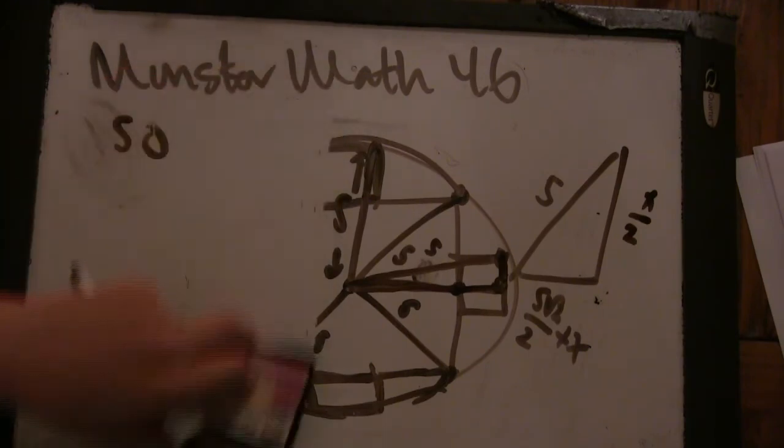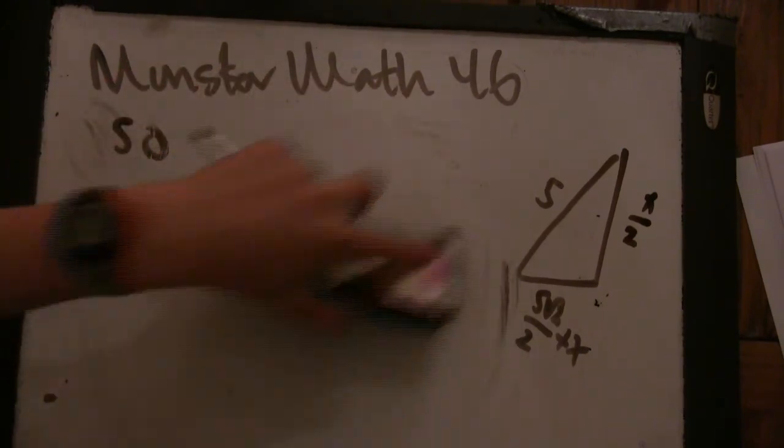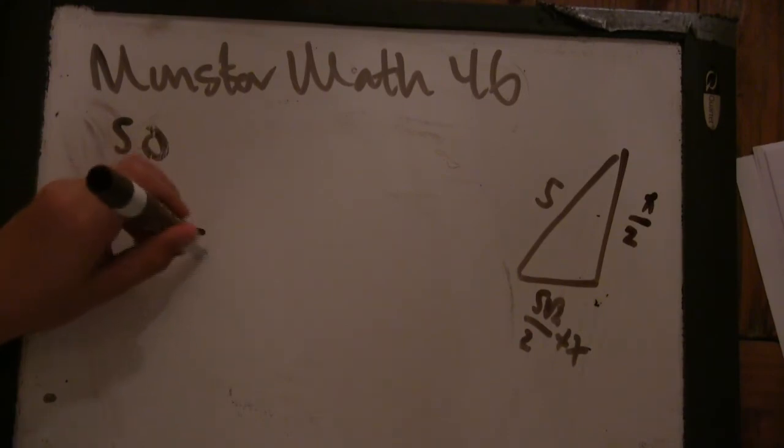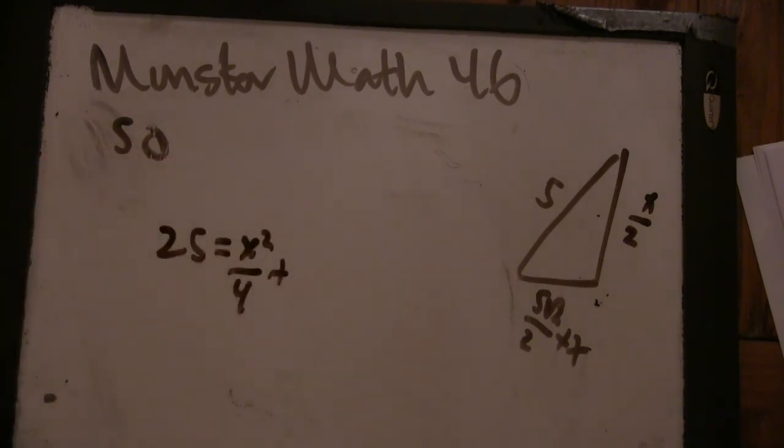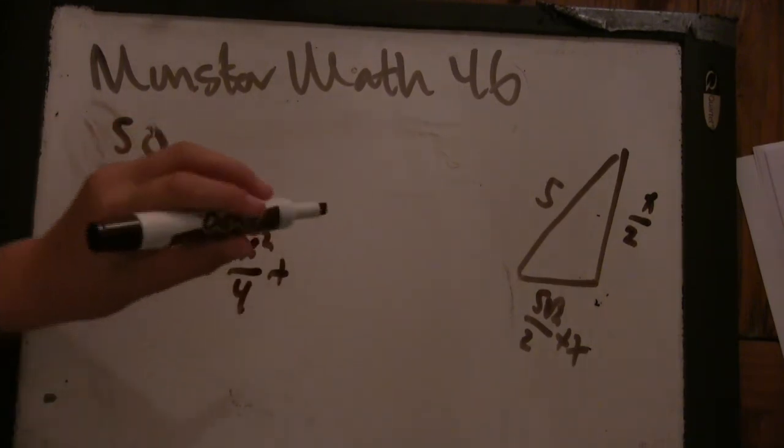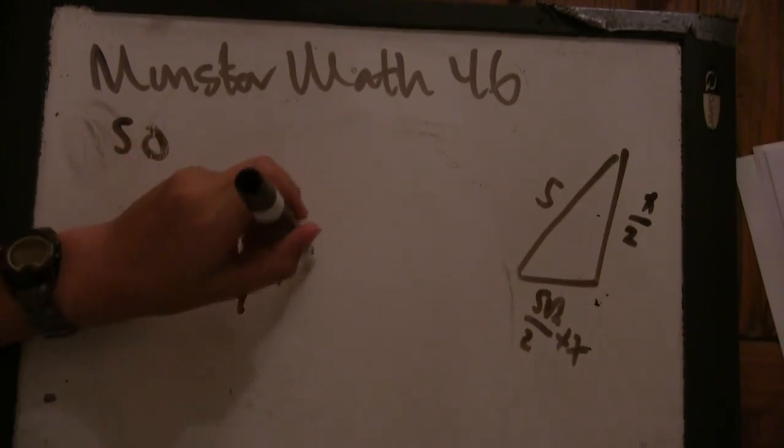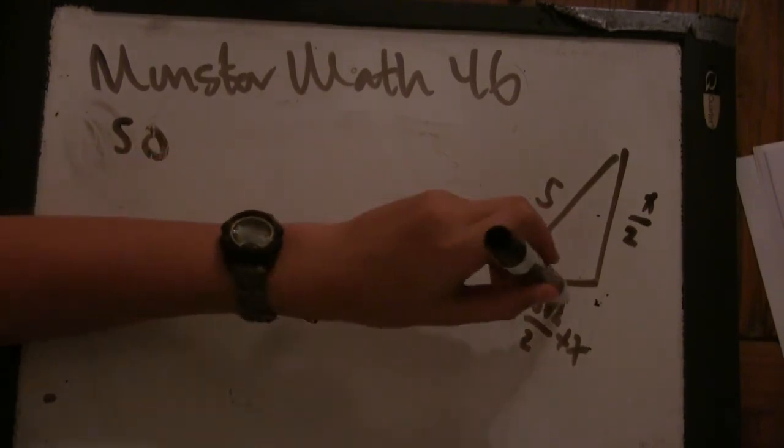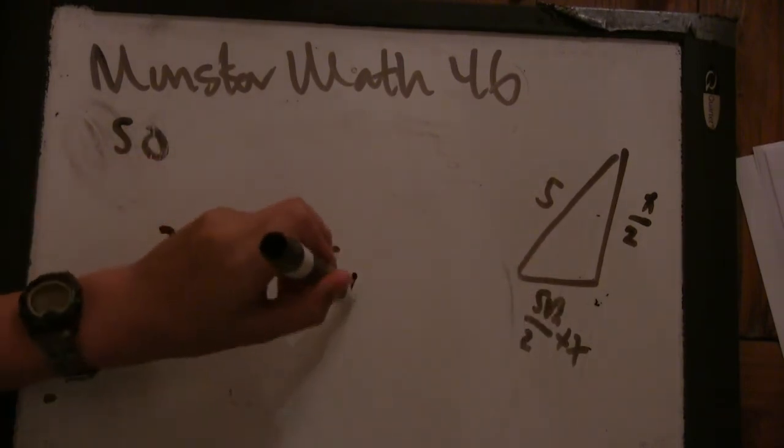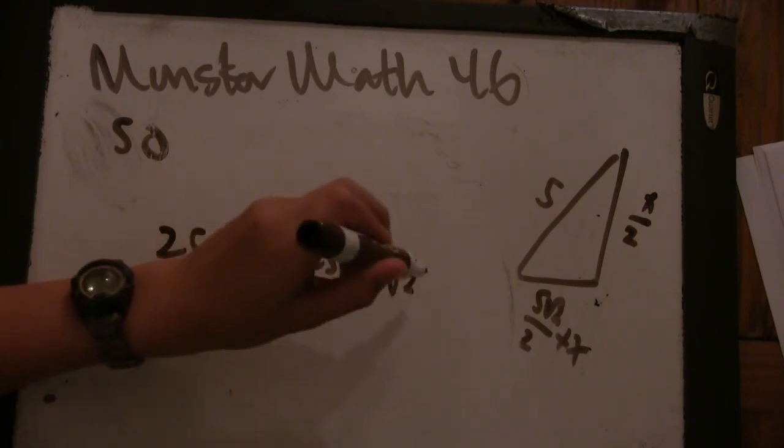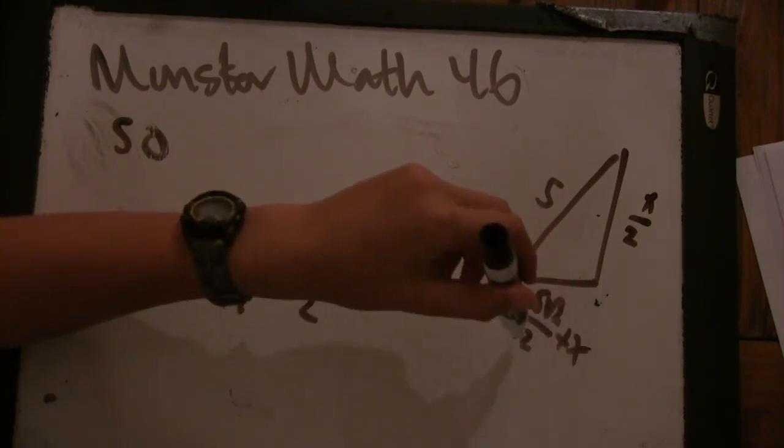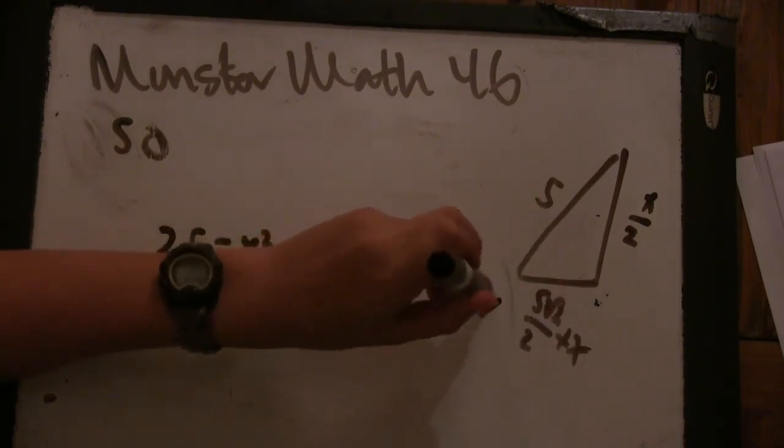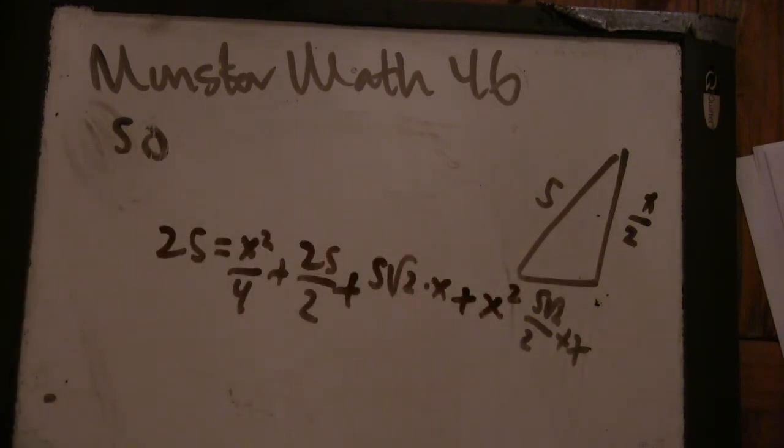So I'll erase this. 5 root 2 over 2 plus X. So we have 25 equals X squared over 4 plus 25 halves, because the 2 would cancel. Plus 5 root 2 times X, because there's two of them. So this over 2 would go away. Plus X squared. Okay.